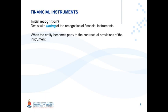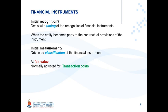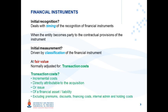The initial recognition of financial instruments deals with the timing of recognition. Financial instruments are initially recognized when the entity becomes party to the contractual provisions of the instruments. Initial measurement is driven by the classification of the financial instrument and is usually at fair value adjusted for transaction costs. Transaction cost is any incremental cost directly attributable to the acquisition or issue of a financial asset or liability.